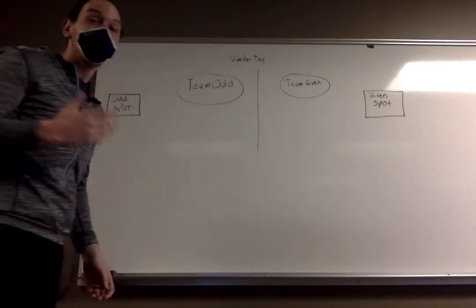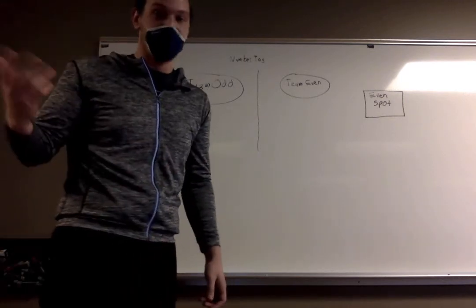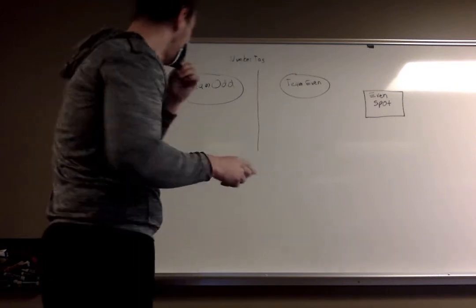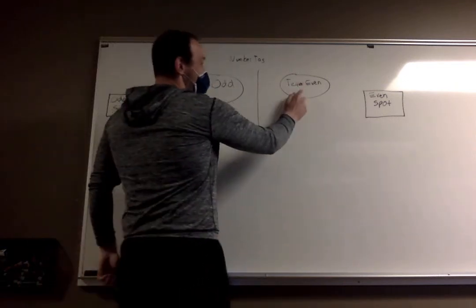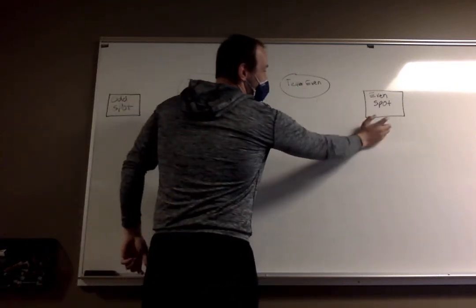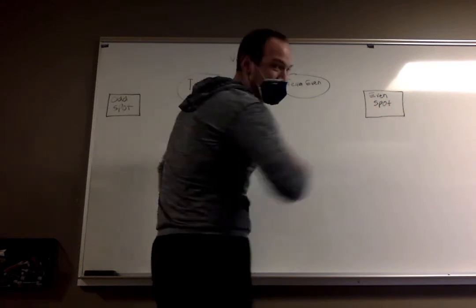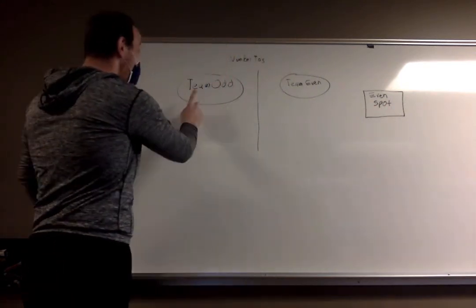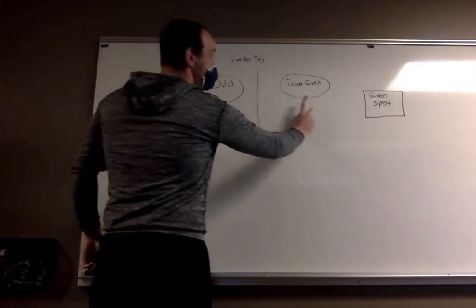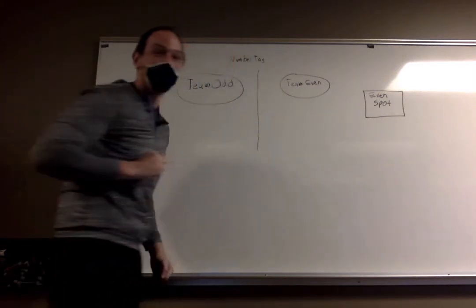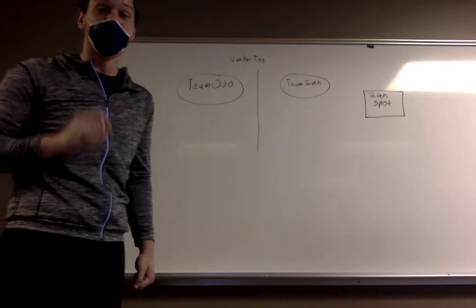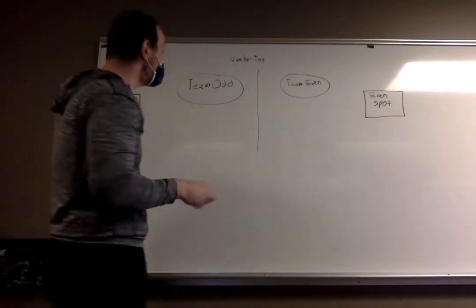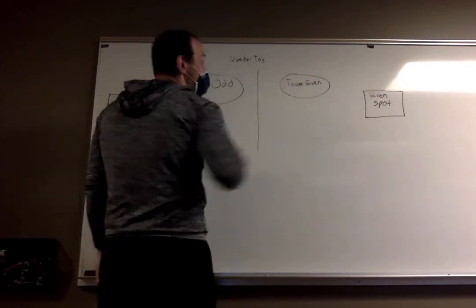Whoever is running the game is going to yell out a number — it could be whatever number, however long. But if it's an even number, then Team Even is going to have to run to their home base, labeled as the even spot. As they're running, Team Odd is going to be chasing Team Even to try to get them and tag them before they get to their spot. If they get tagged, they switch teams over, therefore Team Even's numbers would decrease.